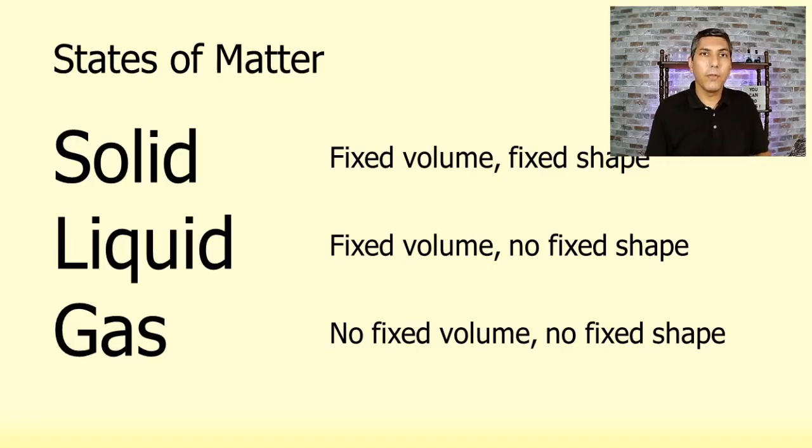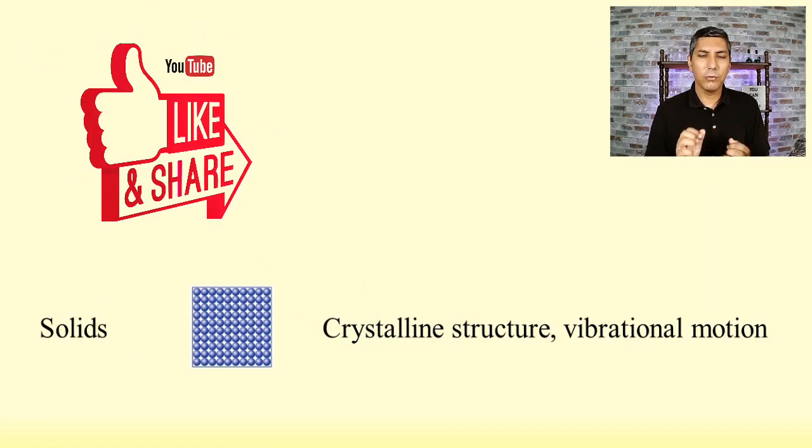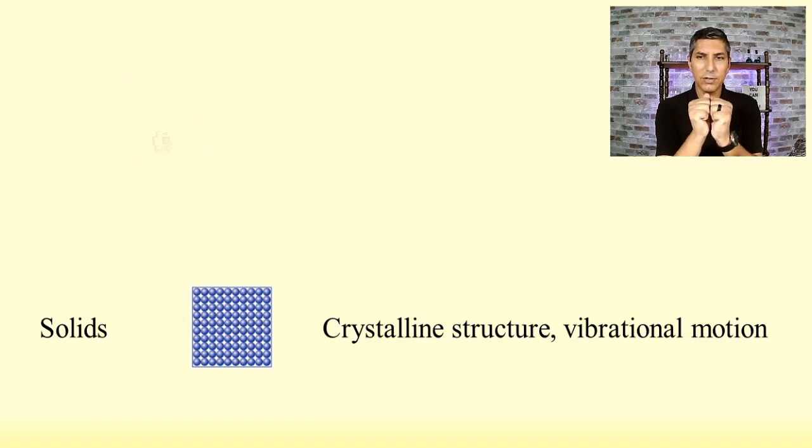For example, in a solid we have molecules that are smashed very close to each other. In fact, we would say that most solids have a crystal structure. If you have a true solid, the molecules are just vibrating against each other.